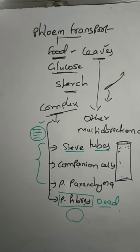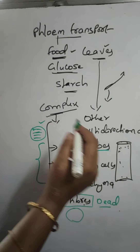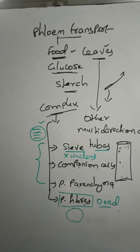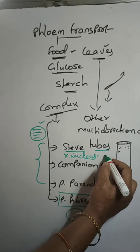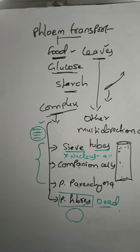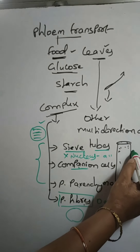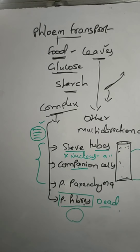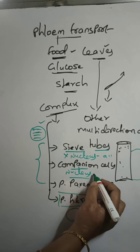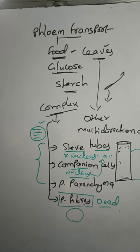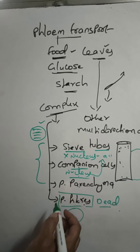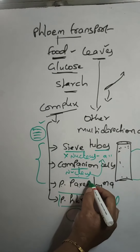In the sieve cells present in the sieve tubes, the nucleus is absent. Since the nucleus's main function is to regulate all metabolic functions, and the nucleus is absent here, sieve cells can't perform metabolic functions on their own. Therefore, companion cells are present adjacent to the sieve tubes — they have the nucleus and will regulate the activities of the sieve cells. That is the main function of companion cells.